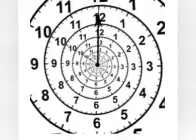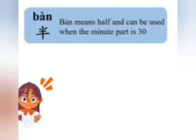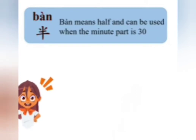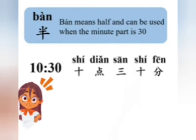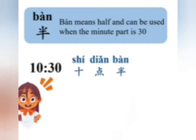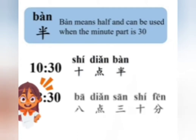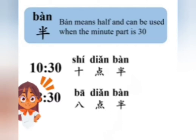Now let's look at a few special cases when telling the time. First, when the minute part is thirty minutes, we can use 半, which means 'half.' Please repeat after me: 半, 半, 半. For example, 10:30 — as we already learned, you can say 十点三十分. Another way is 十点半, like saying 'half past ten' in English. If the time is 8:30, you can say 八点三十分 or 八点半 — half past eight.